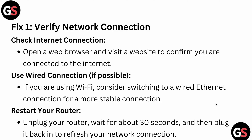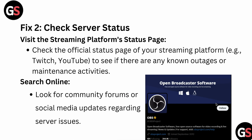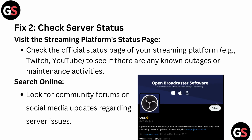After that, you can check the server status. Visit the streaming platform's official status pages — such as YouTube's — to see if there are any outages or maintenance activities. You can also search online and look at community forums and social media updates regarding the servers.